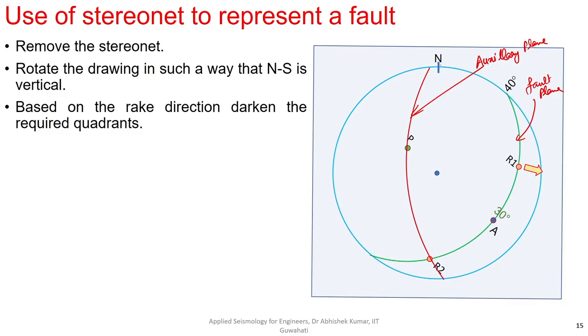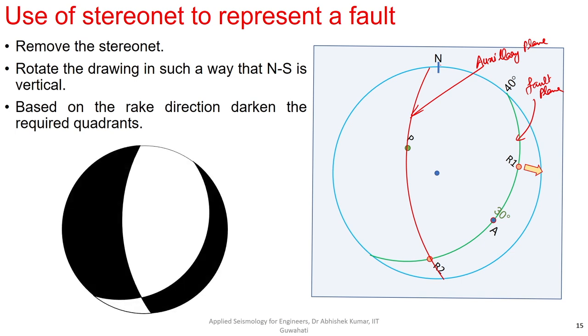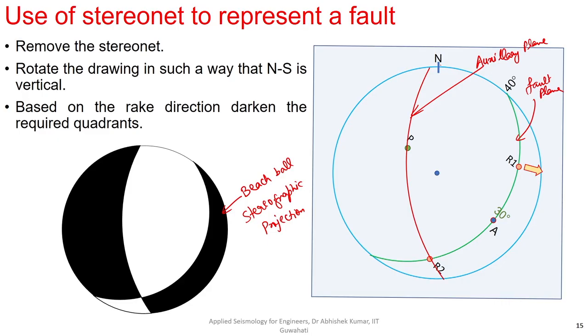Based on the direction of dip, we can locate what are the compression and tension regions. So this determination can also be done with respect to beach ball solution, and it is now also determined with respect to stereographic projection. To summarize: if a stereonet is given along with fault plane solution and rake angle values, we can use it to locate the particular fault plane on the stereonet. There are basically two ways — one is beach ball solution based on first P-wave arrival, and second is stereographic projection using the stereonet. Thank you everyone, with this we come to the end of lecture 4.